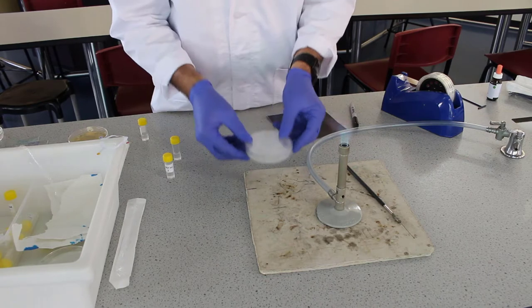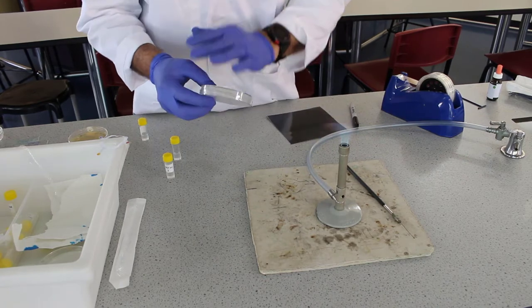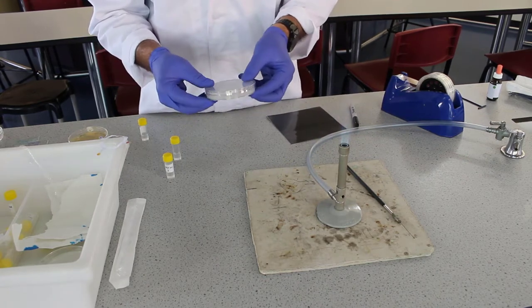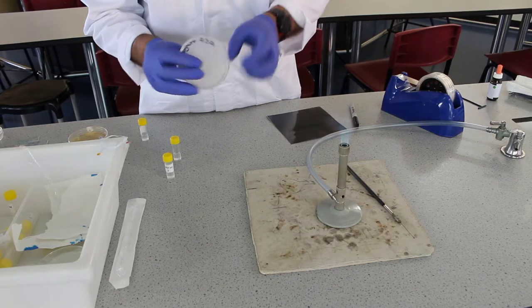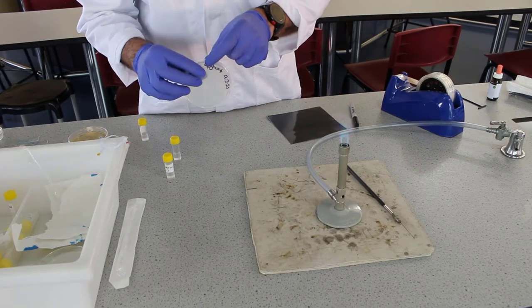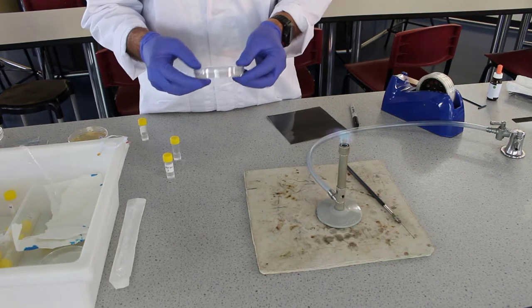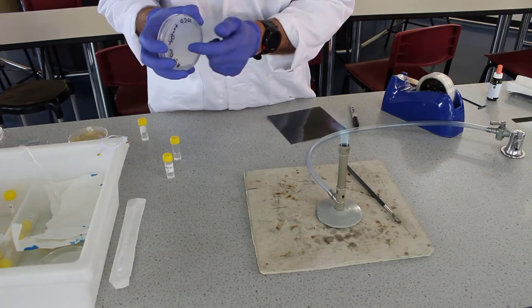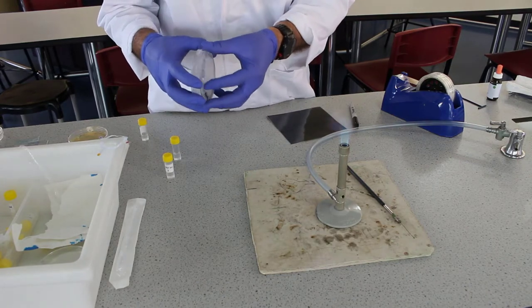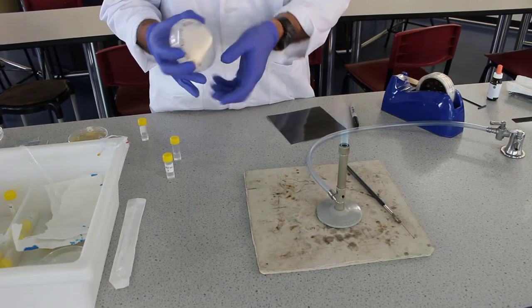The first thing we need is a nutrient agar plate, and on this plate we're going to label the date, the type of bacteria, and the student's name. That needs to be on the base of the agar plate, on the part where the agar is.